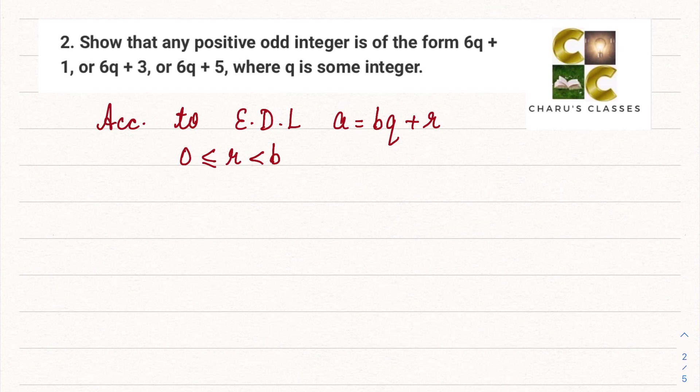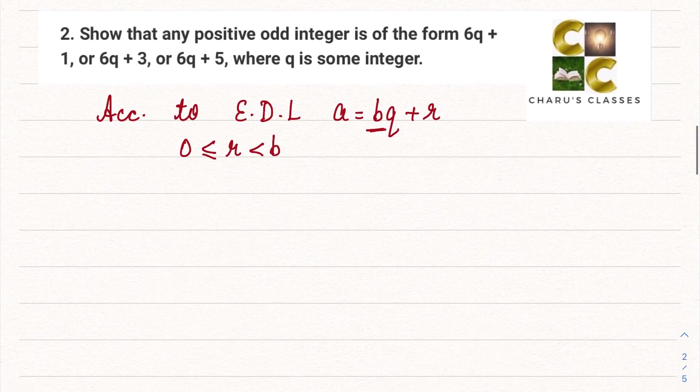So what do we have for b? In the question they have asked us to prove in the form of 6q + 1, 6q + 3, 6q + 5. So here with b we can see that it is 6. So here b is equal to 6.